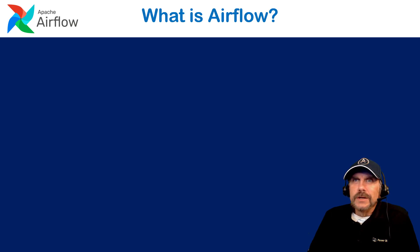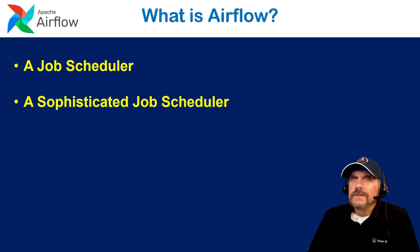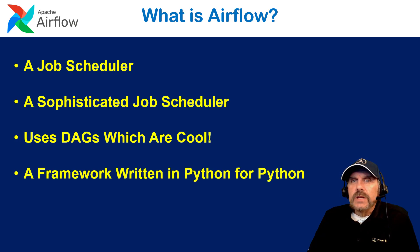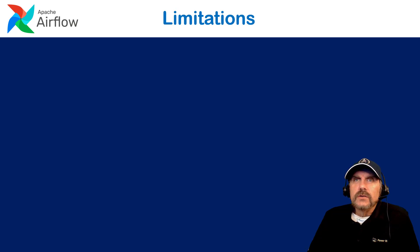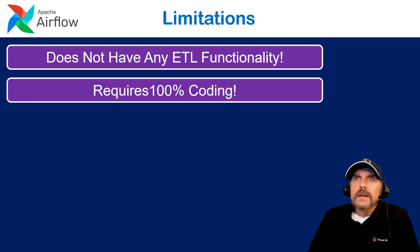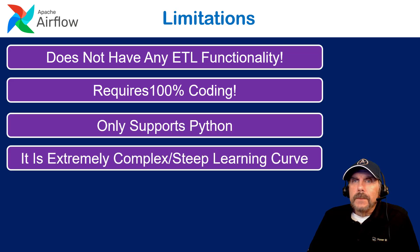Airflow is a sophisticated job scheduler. It uses DAGs, which are really cool and trendy right now. In the end, it is a framework written in Python and only for Python — that's important to remember. Now let's talk about the limitations. It does not have any ETL functionality, so if you're expecting help moving data into or out of databases or writing to files, you're not getting it. It requires 100% coding — in an age of low-code and no-code tools, this is all code, which is a lot of maintenance. It only supports Python.